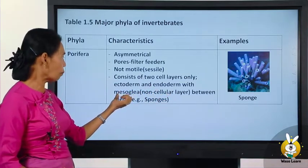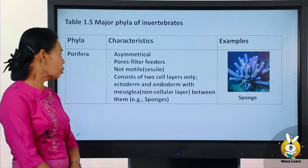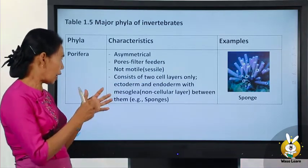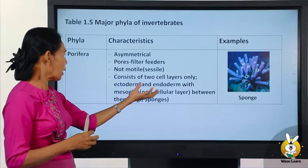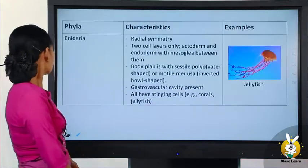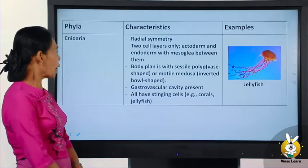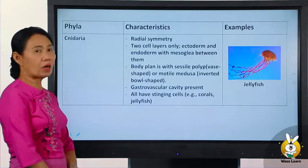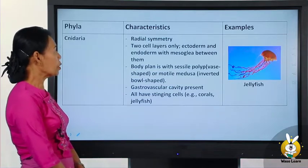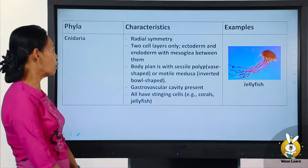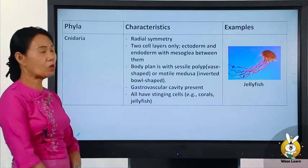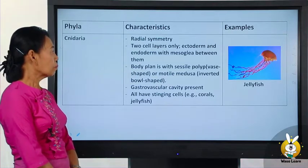The mesoglia is a non-cellular jelly-like layer between the ectoderm and endoderm. Sponges have a special body plan with this arrangement.